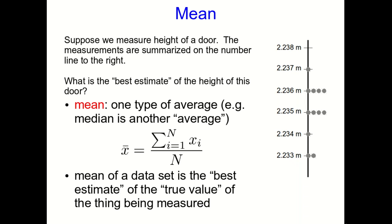And you've probably learned to calculate it. We always take the mean of a data set as the best estimate of the true value, whatever that means. There may not actually be a true value of the height of the door because, for example, one side may be a different height from the other. But we still want to have one number that we think is the most representative value of the measurements of height of the door.